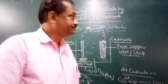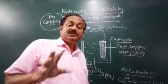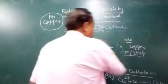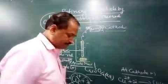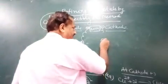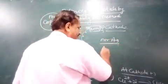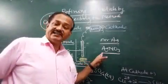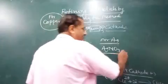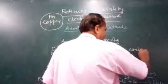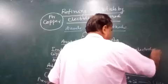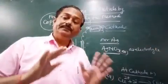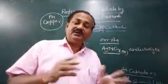If you take silver or any other metal, a water-soluble salt of that metal has to be taken as the electrolyte. For example, if we take silver, we use a water-soluble silver salt such as AgNO₃ (silver nitrate) as the electrolyte.